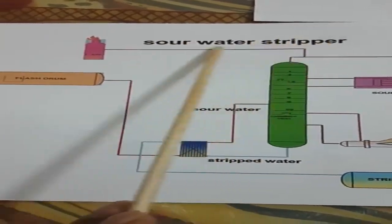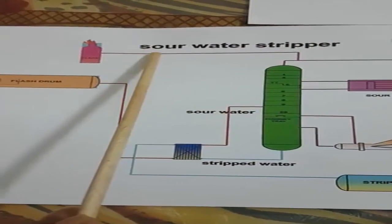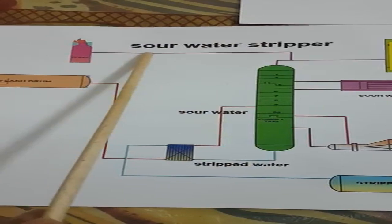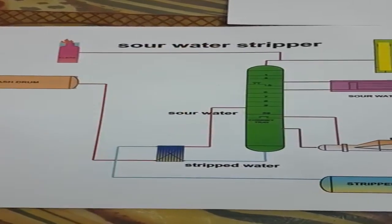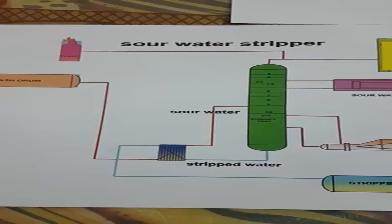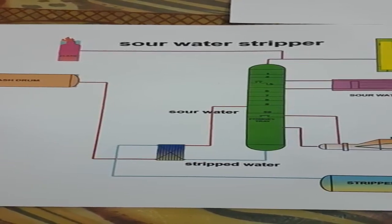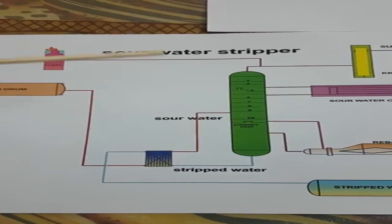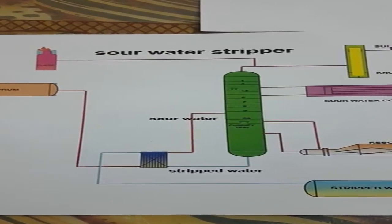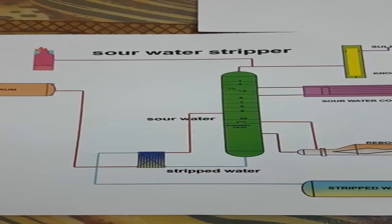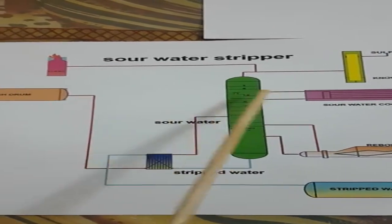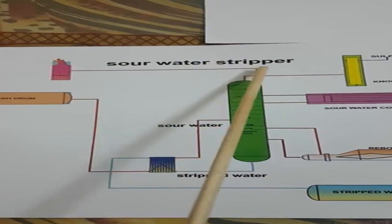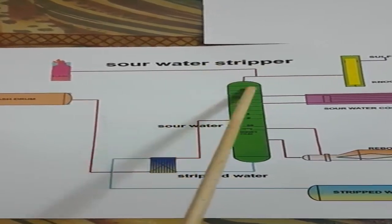Before starting, I will give you the definition of the technical terms used here. Sour water means water which contains a noticeable or large amount of hydrogen sulfide gas. Sour gas is the gas which contains a substantial amount of hydrogen sulfide gas. A sour water stripper is a distillation column or packed column in which we strip hydrogen sulfide gas, and the resulting water is called strip water.